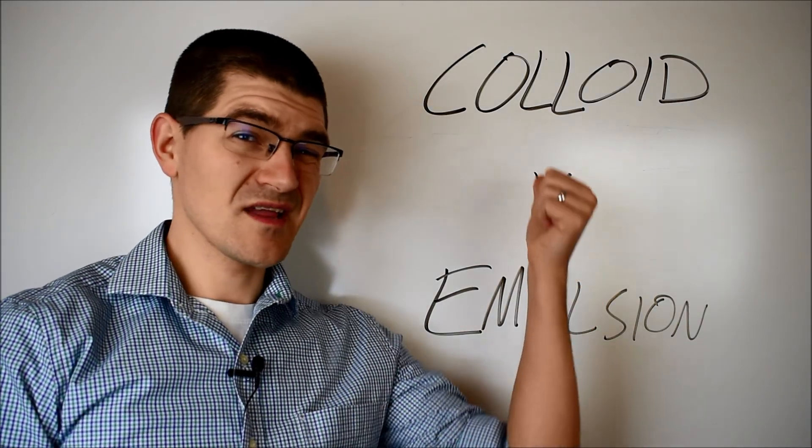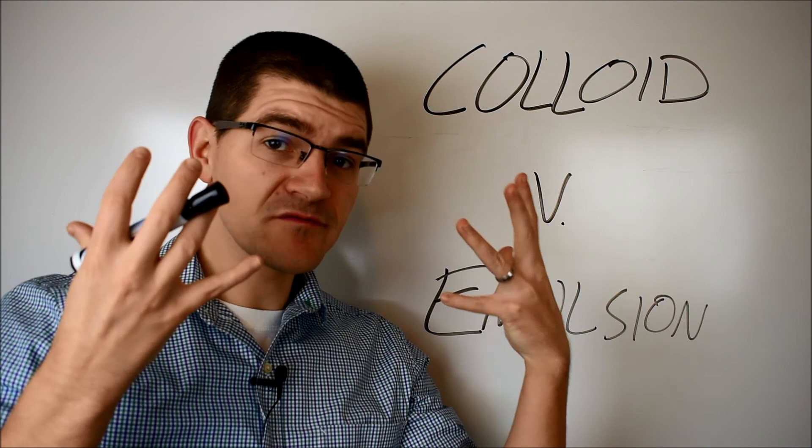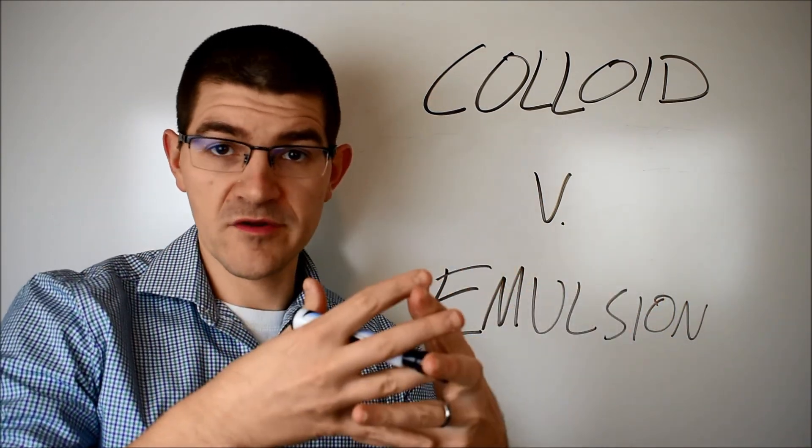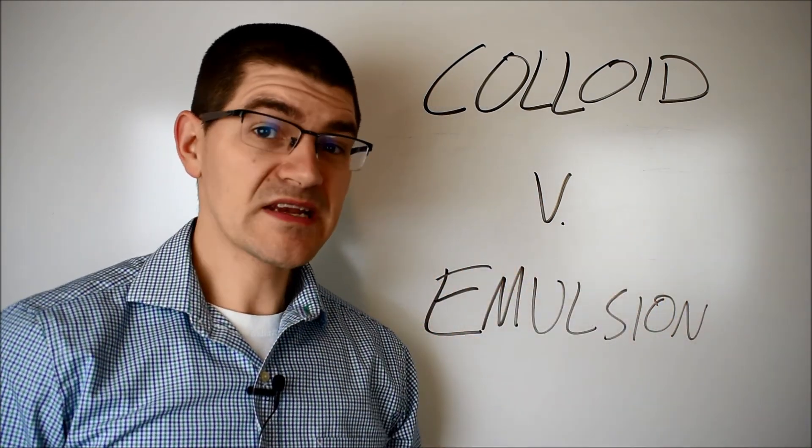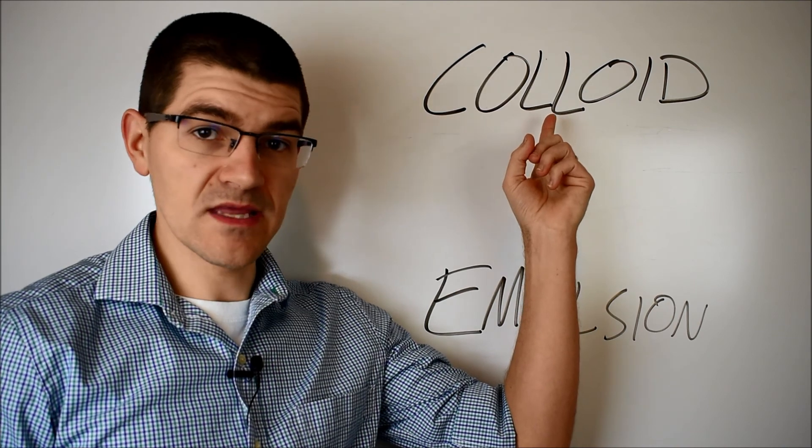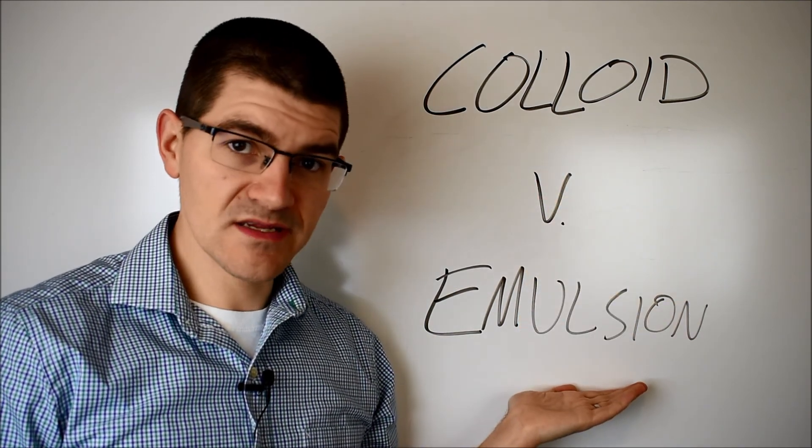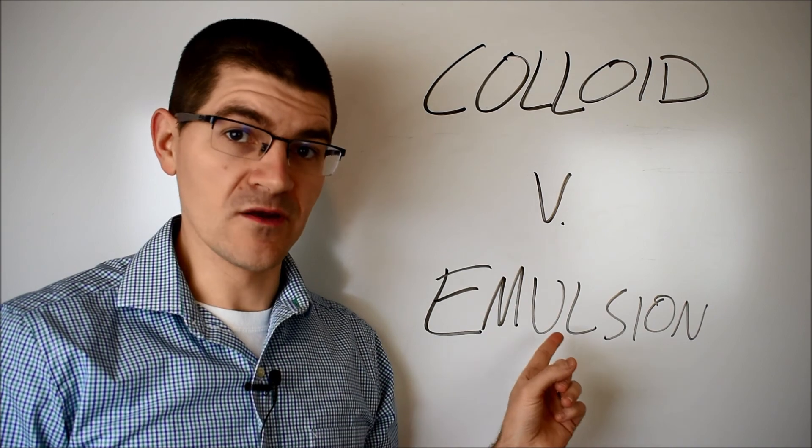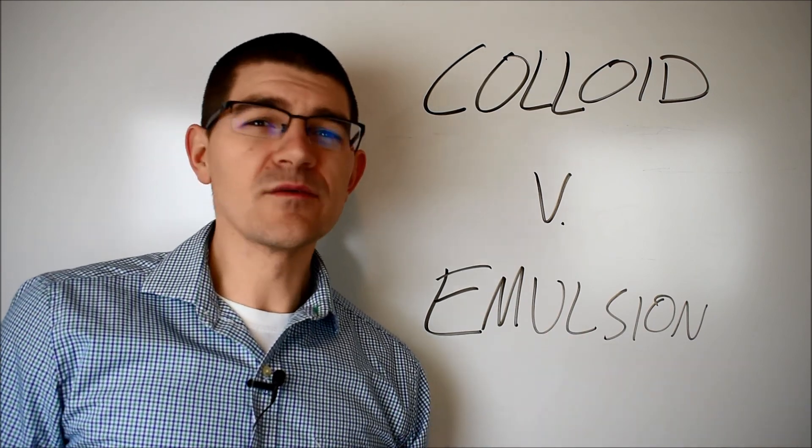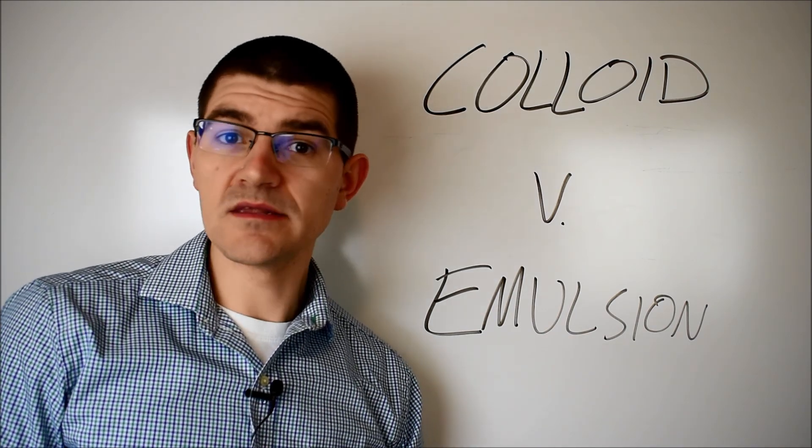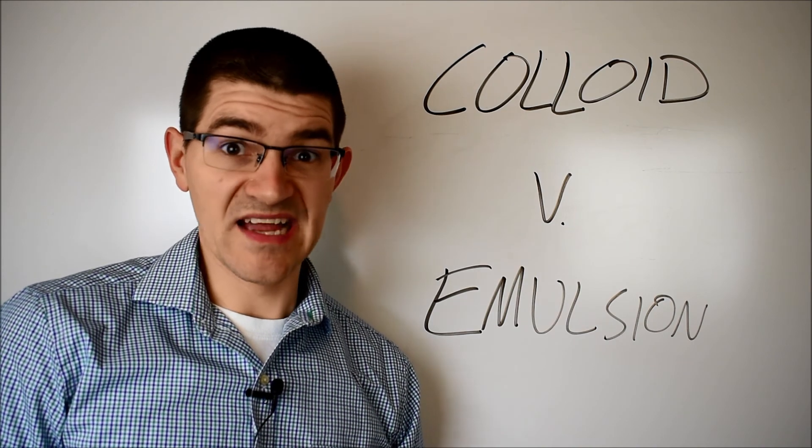An emulsion is pretty much the same thing as a colloid. It's a mixture of two immiscible materials that, for whatever reason, are not. The big difference is a colloid is a mixture of a liquid and a solid, while an emulsion is a mixture of two liquids. So think something like oil and water here. A lot of edible systems, such as mayonnaise and hollandaise, are emulsions, but I digress.